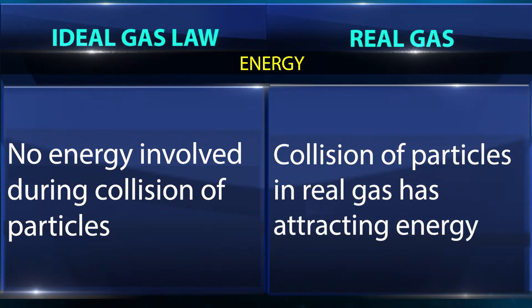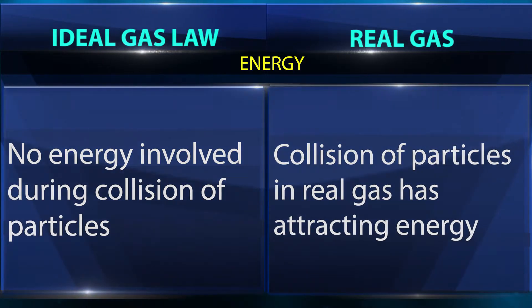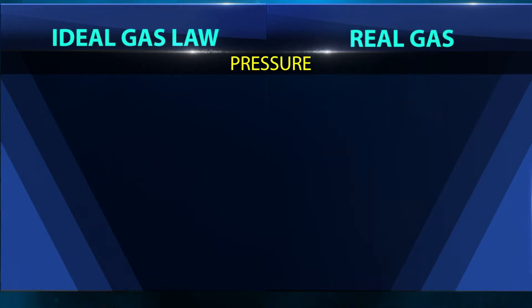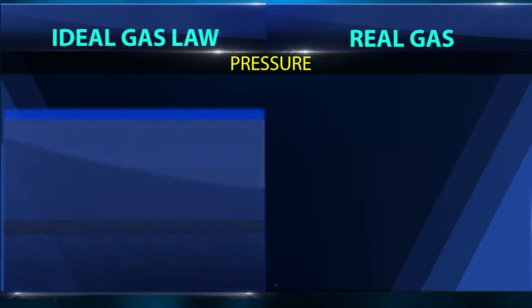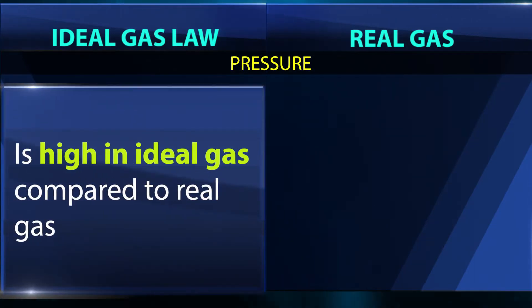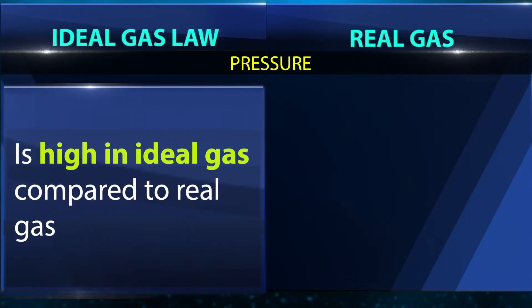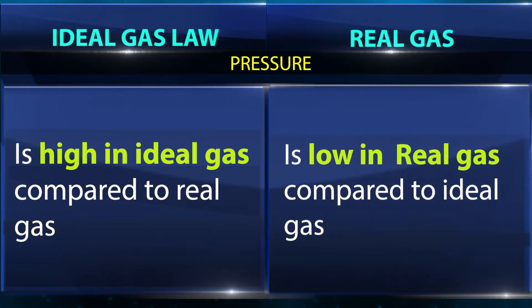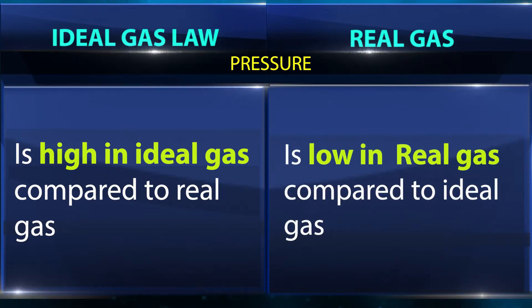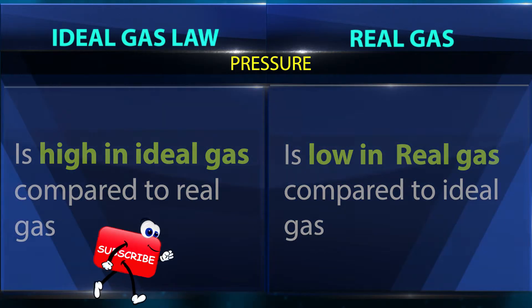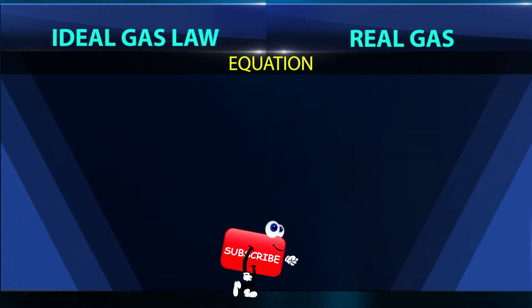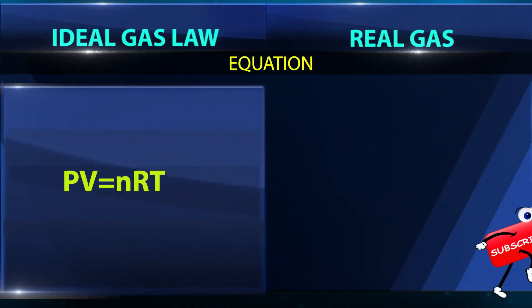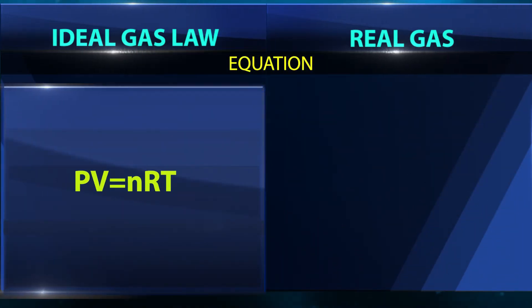Energy — ideal gas has no energy involved during collision of particles, while real gas particles have attracting energy during collision. Pressure — pressure in ideal gas is high compared to real gas, and pressure in real gas is low compared to ideal gas.